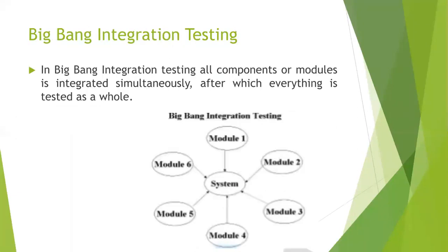In Big Bang integration testing, all components or modules are integrated together and tested as a whole. For example, if a system has six modules, all six modules are integrated simultaneously and tested together.